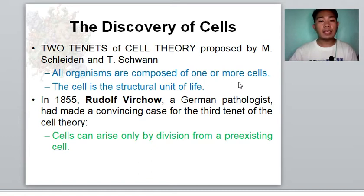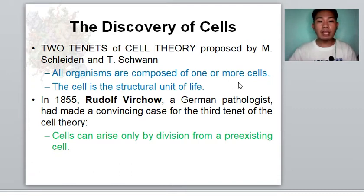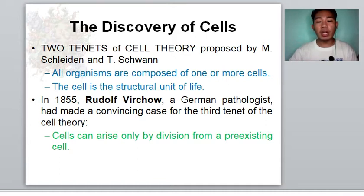Meanwhile, in 1855, Virchow, a German pathologist, made a convincing case for the third tenet of the cell theory, which states that cells can arise only by division from a pre-existing cell.